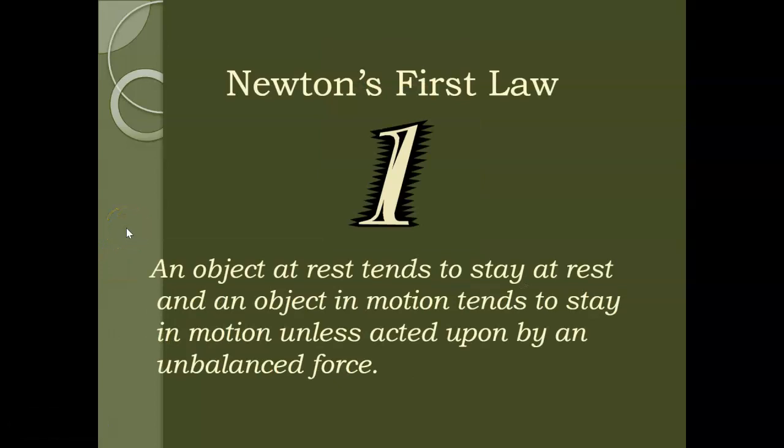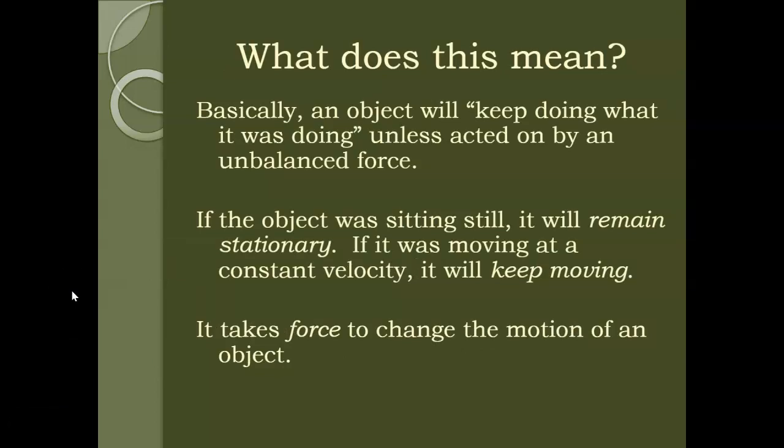So Newton's first law states that an object at rest tends to stay at rest, and an object in motion tends to stay in motion unless acted upon by an unbalanced force. Think about a soccer ball, for example. If it's not moving, if it's just resting on the grass, you're going to need to come up and kick that ball in order to set it in motion. It needs an unbalanced force applied to it in order to get it to move. And if you think about a car or something that's a moving object, it's going to need a force applied to it in the opposite direction in order to get it to stop. And those forces can be things like friction, resistance, which we'll talk about a little bit more. So an object will keep doing what it's doing unless it's acted on by an unbalanced force. If the object was sitting still, it will remain stationary. If it's moving at a constant velocity, it will keep moving unless something acts on it to stop it. It takes force to change the motion of an object.